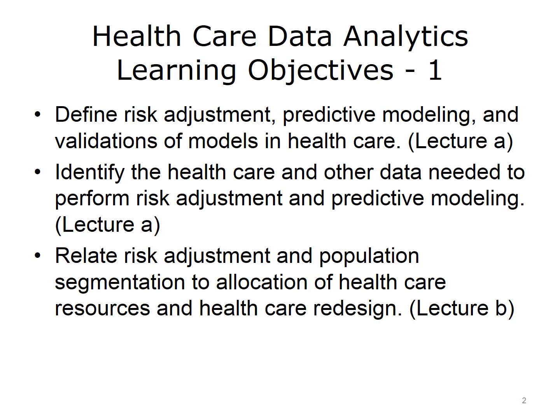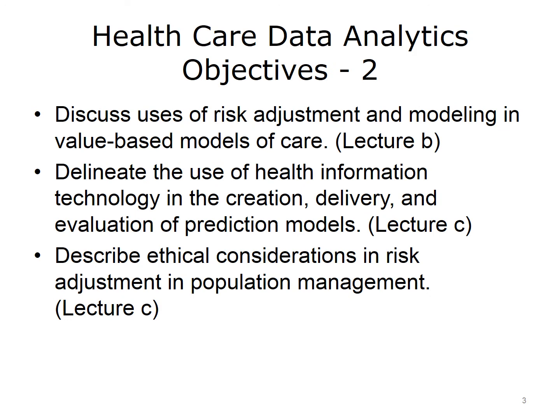The objectives for this unit, Risk Adjustment and Predictive Modeling, are to define risk adjustment, predictive modeling, and validations of models in healthcare. Identify the healthcare and other data needed to perform risk adjustment and predictive modeling. Relate risk adjustment and population segmentation to allocation of healthcare resources and healthcare redesign. Discuss uses of risk adjustment and modeling in value-based models of care. Delineate the use of health information technology in the creation, delivery, and evaluation of prediction models. And describe ethical considerations and risk adjustment in population management.